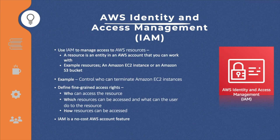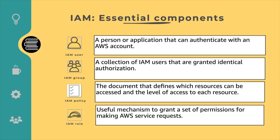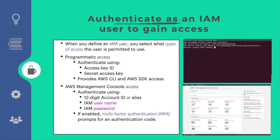There are four IAM components. An IAM user is a person or application defined in the AWS account that must make API calls to AWS products. Each user must have a unique name within the account and a set of security credentials not shared with others — different from the AWS account root user credentials. When defining an IAM user, you select what type of access is permitted: programmatic access (using an access key ID and secret access key) or AWS Management Console access (using account ID and password). If multi-factor authentication is enabled, users are also prompted for an MFA code.